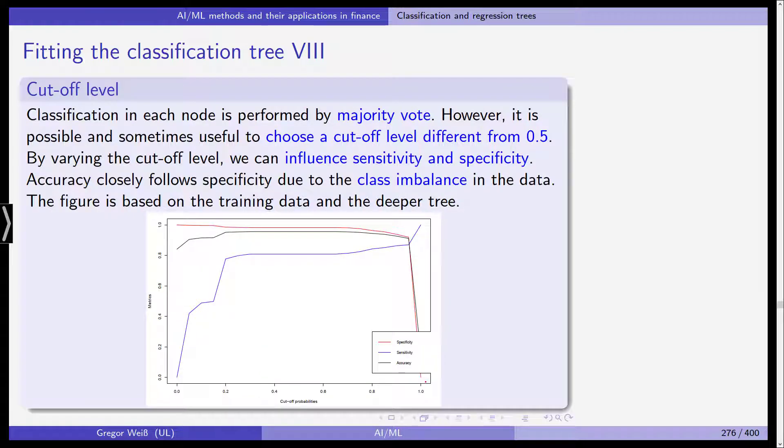Let's talk about the cutoff level. Classification in each node is, as I mentioned in the previous video, performed by a majority vote. However, it is possible and sometimes even useful to choose a cutoff level that is different from 50%. So it's not 50% and then it's class 1, otherwise it's class 0. You can also vary this cutoff level and we can influence the sensitivity and the specificity by choosing a different cutoff level.